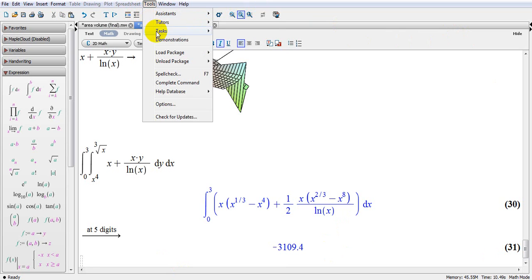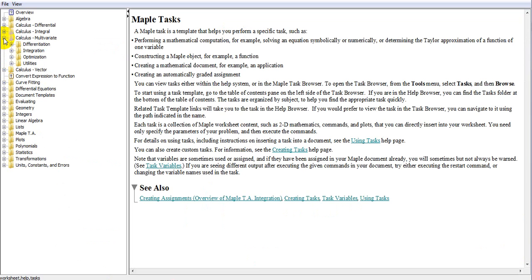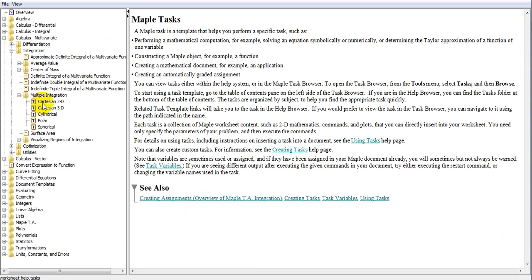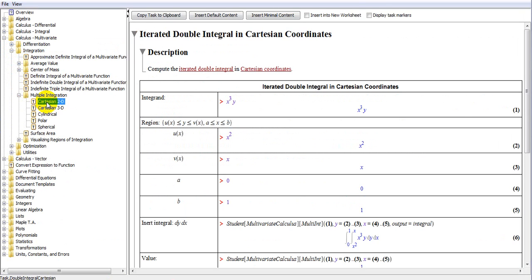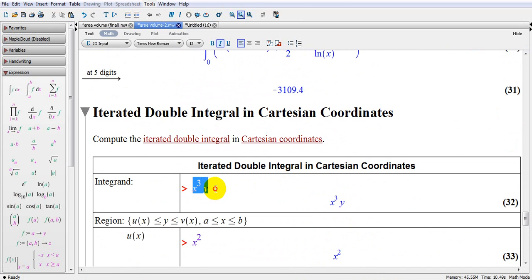In order to do that, you go to tools, you go to tasks, you go to browse, and then you go to calculus, multivariable integration, multiple integration, and you go to 2D Cartesian. You get this example, you insert the default content, and let's just start to build what we have here.